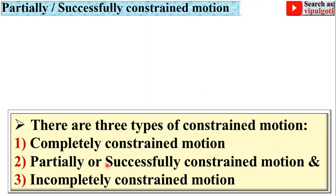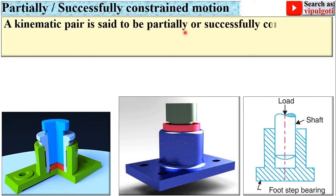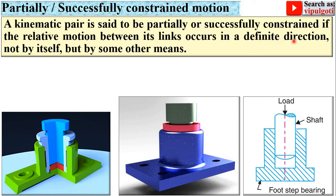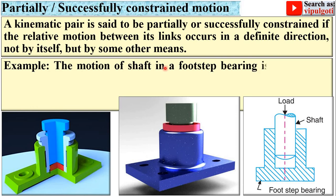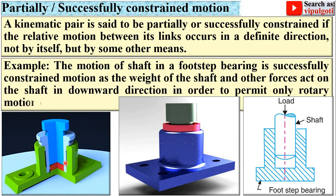Next, the second type: partially or successfully constrained motion. A kinematic pair is said to be partially or successfully constrained if the relative motion between its links occurs in a definite direction not by itself but by some other means. Example: the motion of a shaft in a footstep bearing is successfully constrained motion. Here you can see the 3D figure of the footstep bearing and its cross section — you can use this figure in examinations.